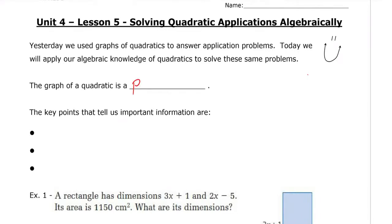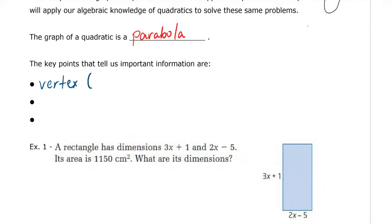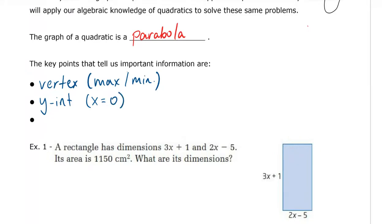Remember, the graph of a quadratic is a parabola, and there are some key points on the parabola that tell us important information. These key points are the vertex, which tells us the maximum or minimum point; the y-intercept, which usually tells us our initial value or starting point — the point where x equals 0; and the x-intercepts, which are when y equals 0.